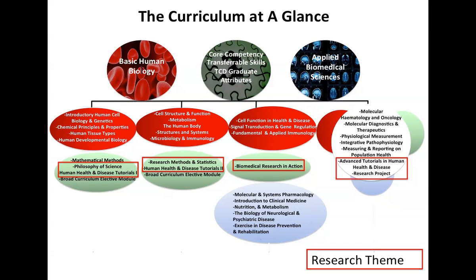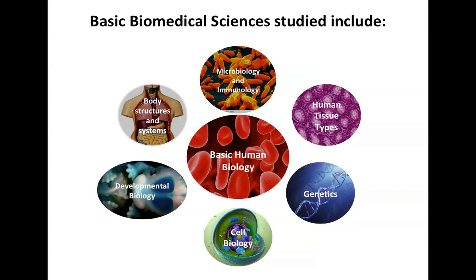There's a very integrated approach to teaching various subjects and modules that can include various parts of all three main themes, integrating the basic biology along with the applied biomedical science. Under the area of basic human biology, subjects include body structures and systems — anatomy and physiology — human tissue types, genetics, cell biology, developmental biology, and microbiology and immunology, giving you a good grounding in basic human biology.